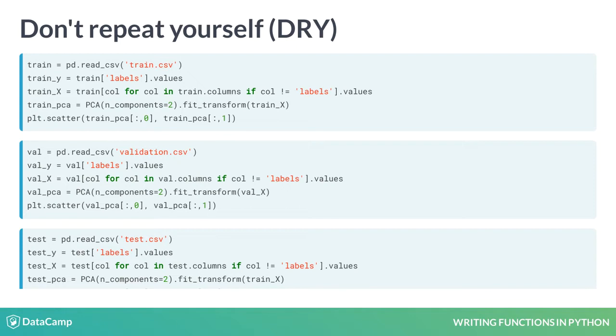I wrote the code for the train dataset, then copied it and pasted it into the next two blocks, updating the paths and the variable names.